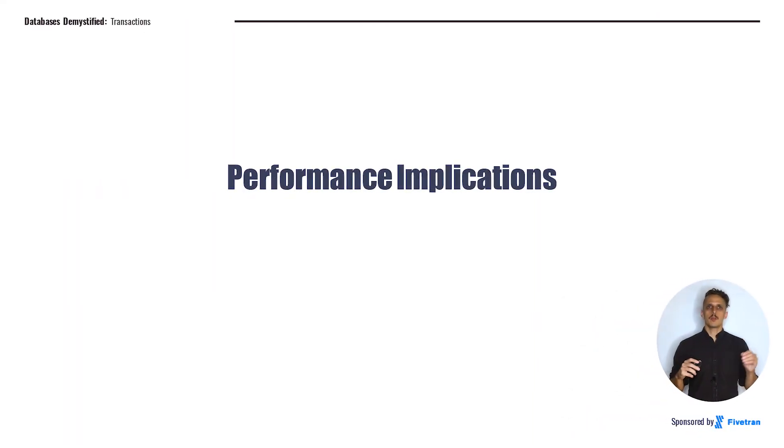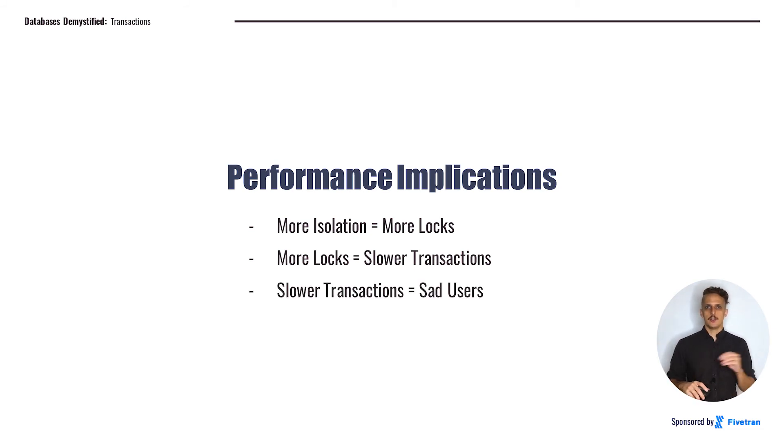So, the most important thing to know when talking about isolation and locks is that there are performance implications here. There are real trade-offs between isolation level and speed. More isolation means more locks. At a higher level of isolation, your database is going to have to put more locks on different pieces of data that it's working with. More locks means slower transactions. The more locks you have, the more likely it is that you're going to block another transaction which slows down your application. Slower transactions make sad users.